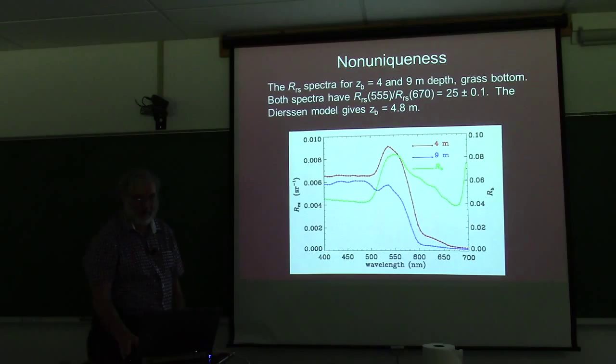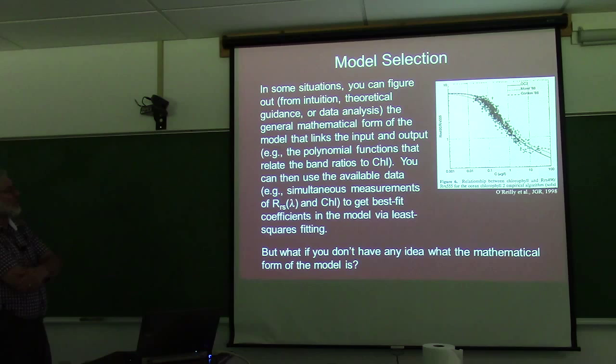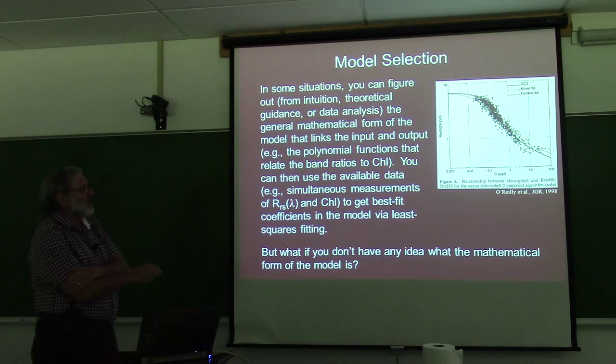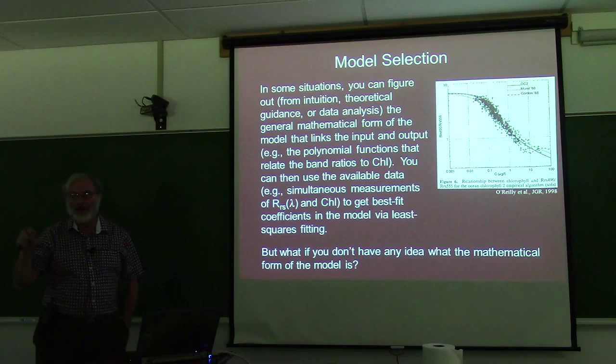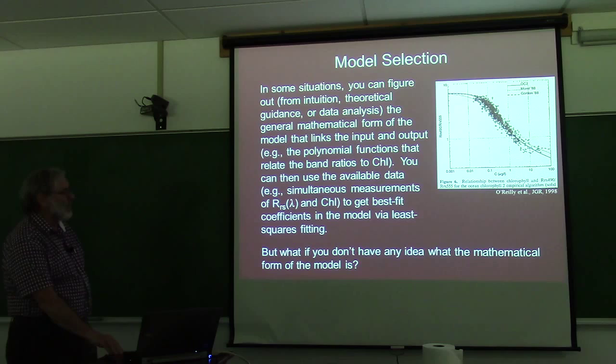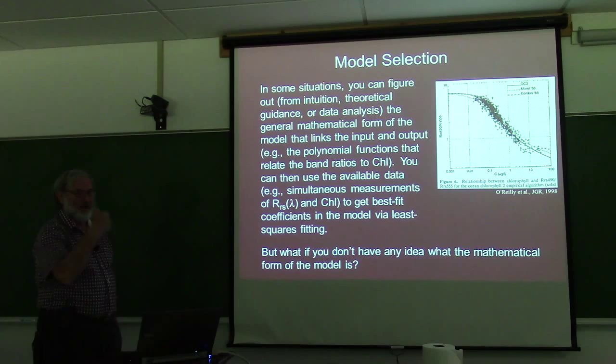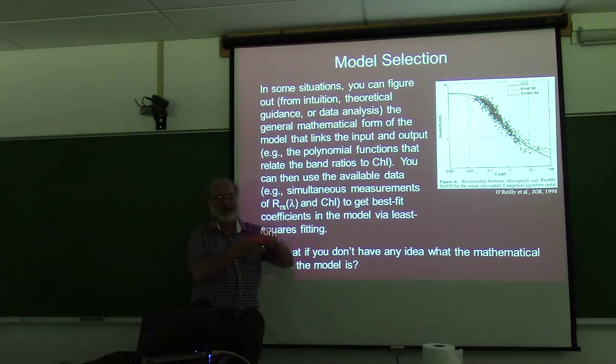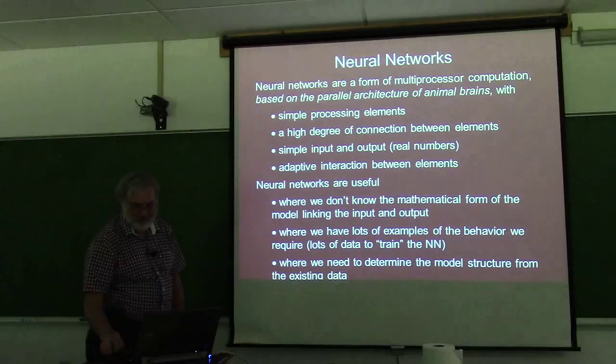To move on: in some cases you can plot your data and say, I'll fit this with a cubic or quadratic or linear function. You look at the data, choose the mathematical form, fit the curve, get the coefficients, and publish your statistical model. But in some cases, the data may be so complicated and involve so many variables that you can't just plot it up and pick a function. So what do you do? There are ways to let the data define the model itself, and that leads us into neural networks.